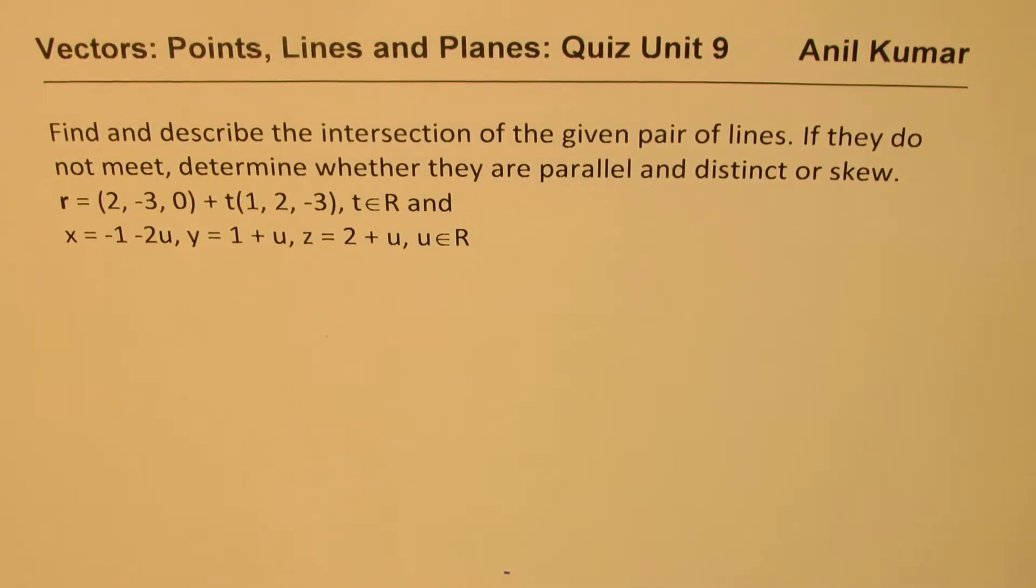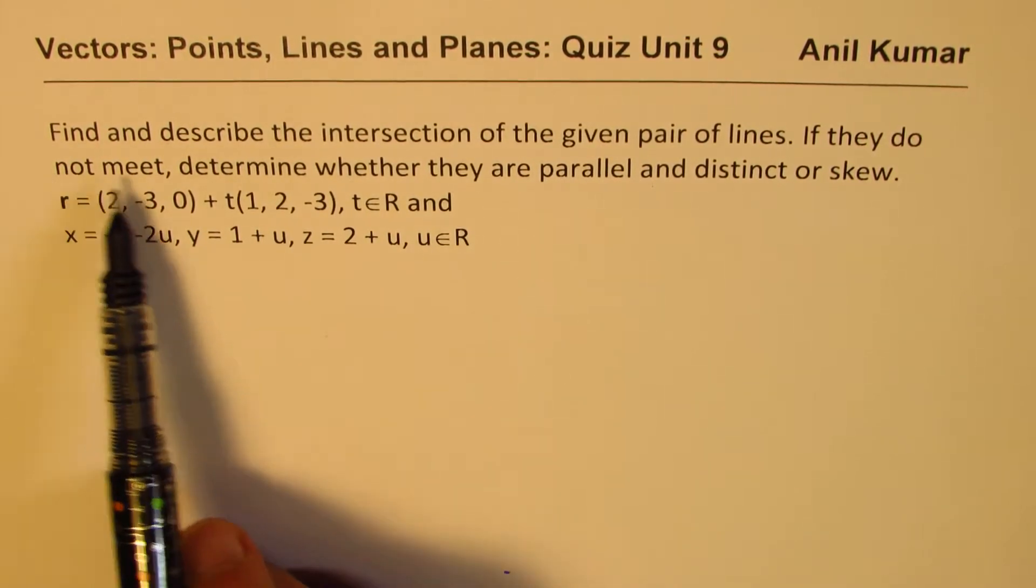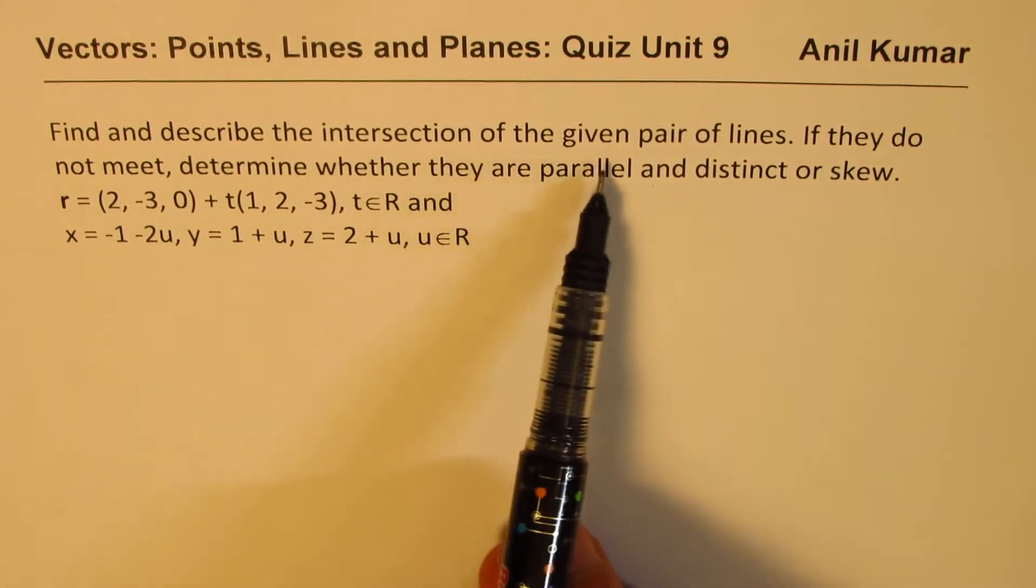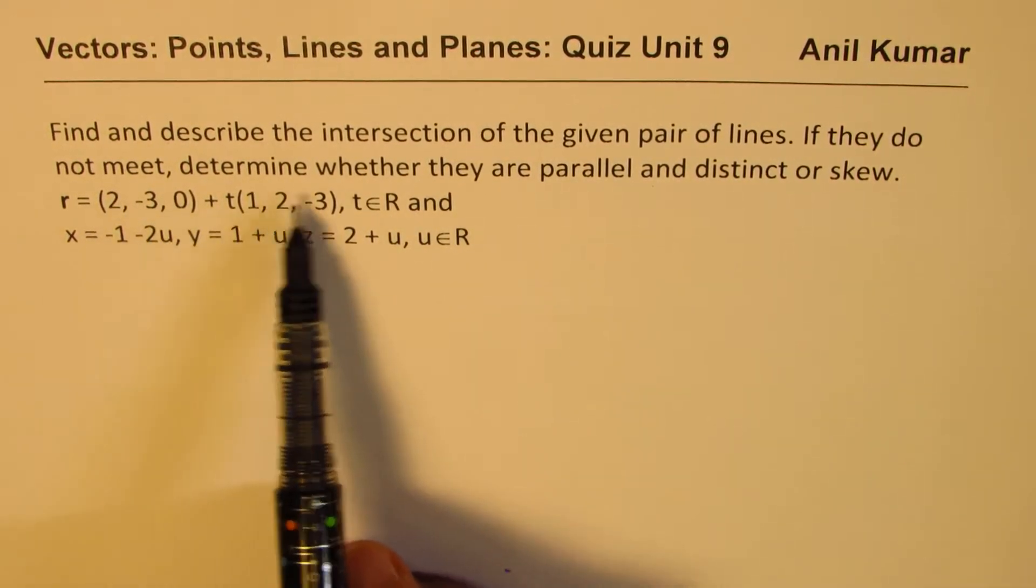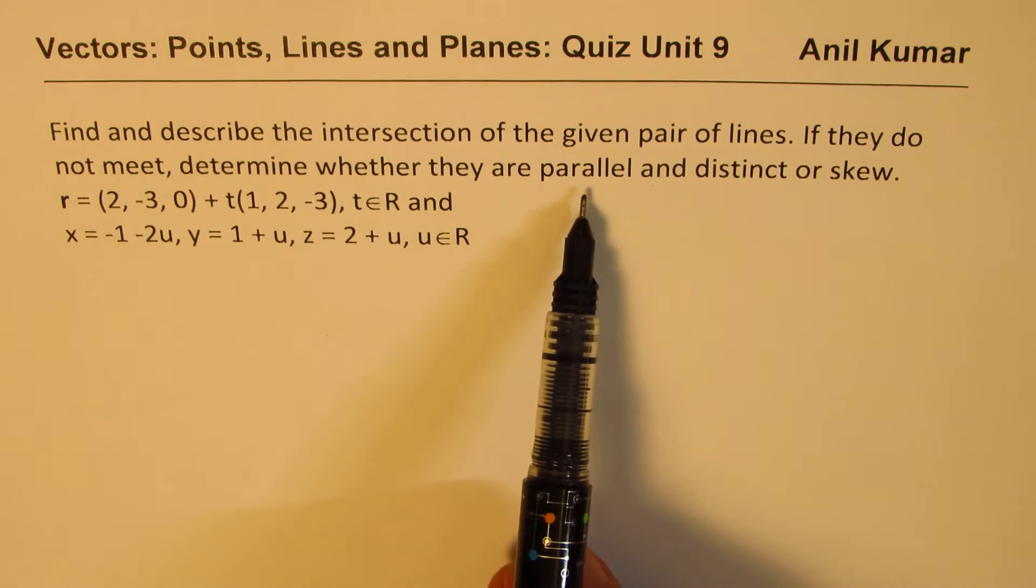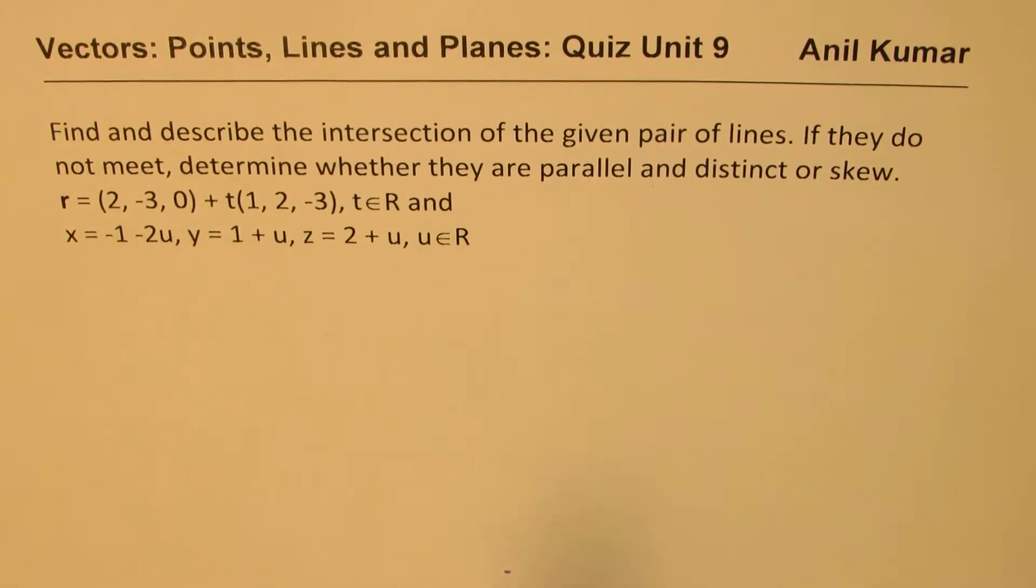Kandil Kumar, welcome to my series on vectors. Here is a question from previous test people. Find and describe the intersection of the given pair of lines. If they do not meet, determine whether they are parallel and distinct or skew.